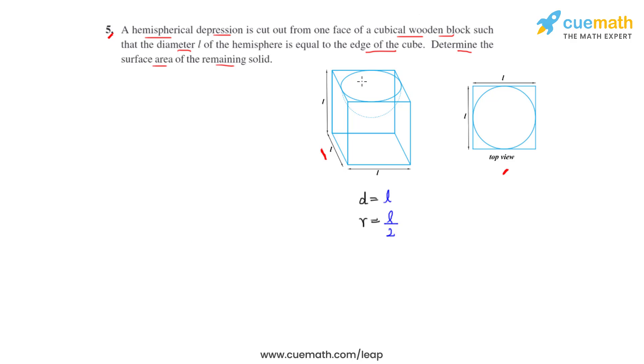So the scooped out part is actually the base of the hemisphere because we have already taken into consideration the curved surface area of the hemisphere which is the new surface area that got created, but we'll have to subtract the base area of the hemisphere.